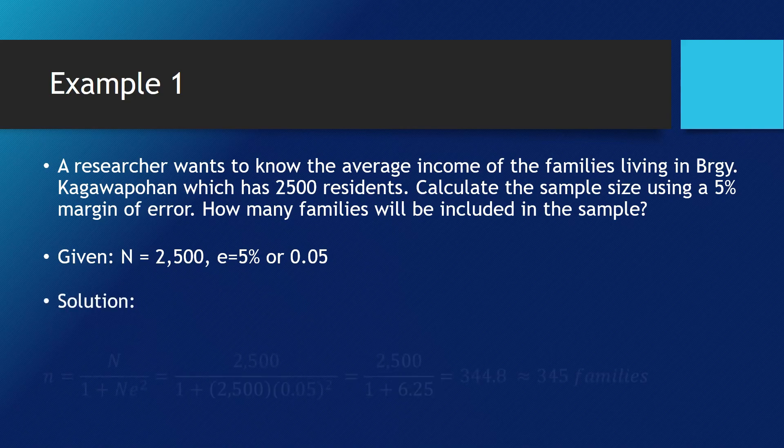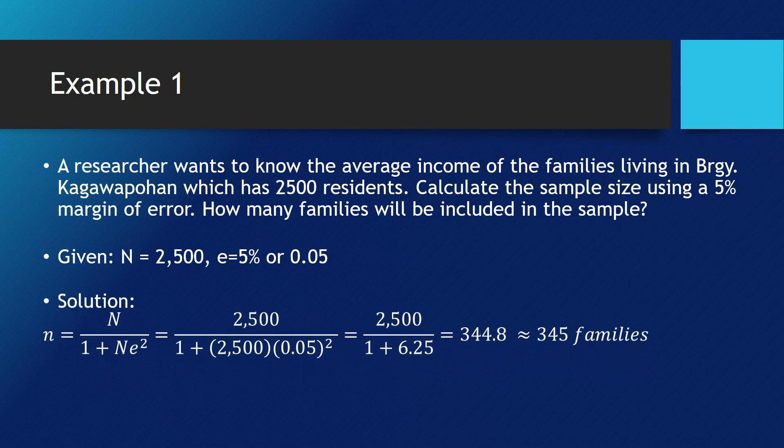This is the solution. Using the formula that was presented a while ago, small letter n is equal to big letter N all over the sum of 1 plus big letter N and e raised to the power of 2. Big letter N, which is the population, is replaced by 2,500 on the numerator and denominator and e, which is the margin of error, is replaced by 0.05.